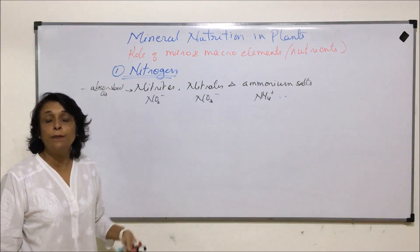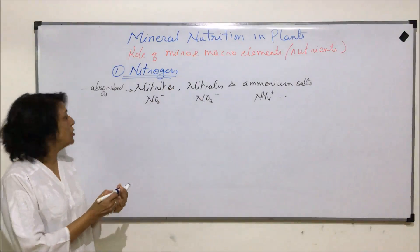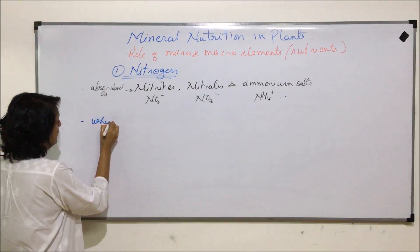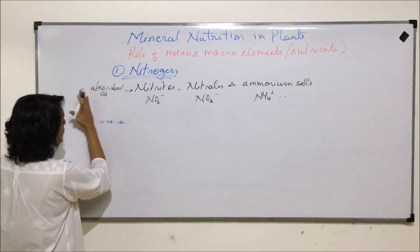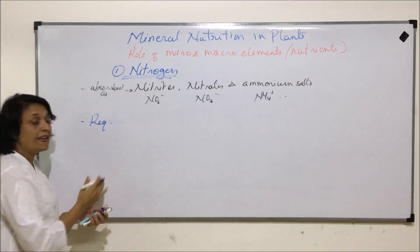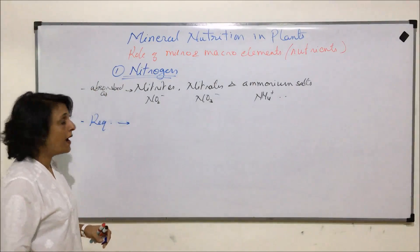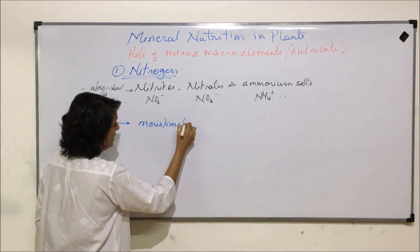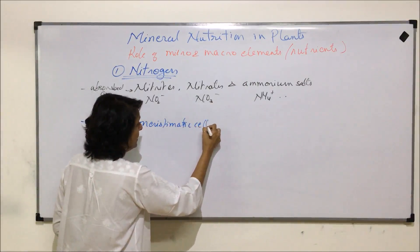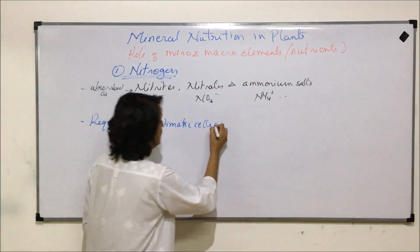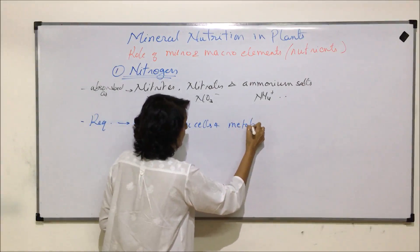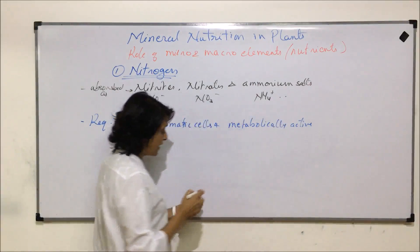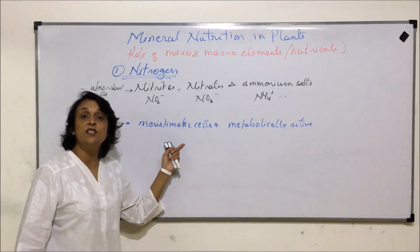Towards the end of this chapter we will also talk about nitrogen fixation. The second important thing is where — or we can write it as 'requirement' — where is nitrogen required? It is required in meristematic cells and metabolically active cells — those cells where metabolic reactions are going on at a faster pace.